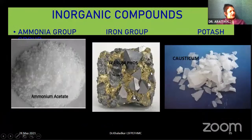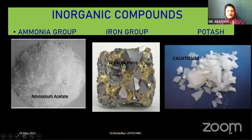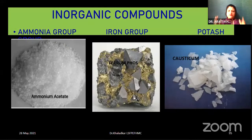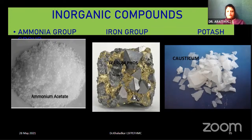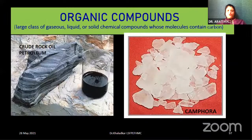Other sources of the mineral kingdom include mineral oils — kerosene, paraffin, petroleum. Then coal-tar distillation: example is naphthalene. From dry distillation of wood, we have camphor and creosote. Organic compounds are a large class of gaseous, liquid, or solid chemical compounds. Crude rock oil — petroleum — how it's prepared is very important. One more example: camphora — camphor is an organic compound. From inorganic salts and compounds: examples include Baryta carbonica, Baryta muriatica — barium chloride, Calcarea phosphorica, Calcarea carbonica, Lithium carb, Natrum sulph, and Ammonium carb.